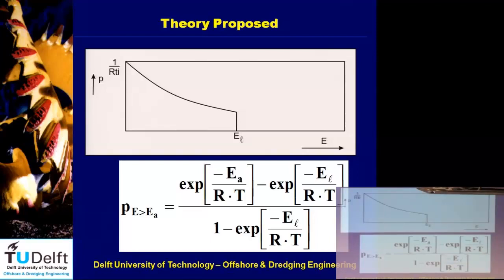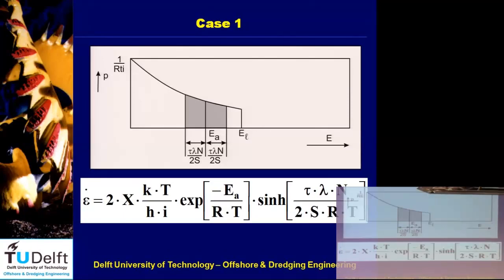That equation matches the data points, and for dredging applications we found that the dynamic cohesion of clay — including the strengthening effect — is about two times the static cohesion. That's very important: if you go to a laboratory with clay samples and they say the shear strength is 50 kPa, in your cutting equations you have to use 100 kPa — twice, just because of this strengthening effect.